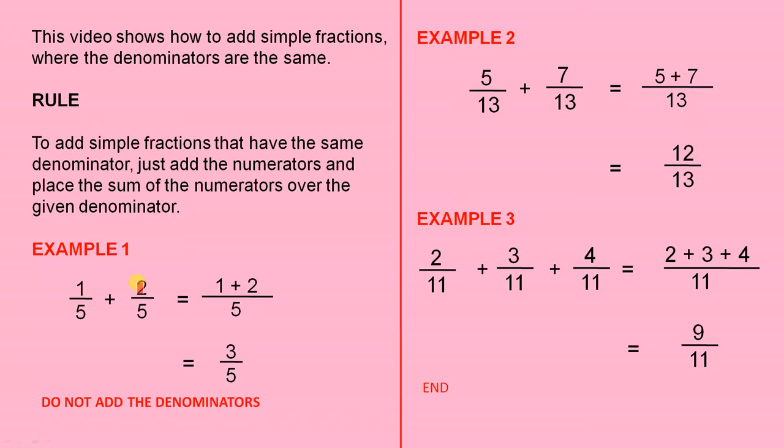So for this example, we're asked to simplify 1 over 5 plus 2 over 5, which is 1 fifth plus 2 fifths. Since the denominators are the same, that is very crucial. They are both the same. We're allowed to add the numerators.